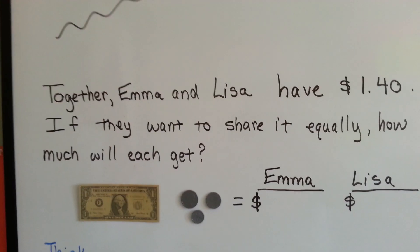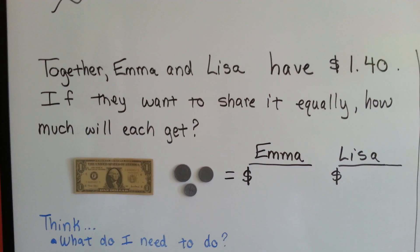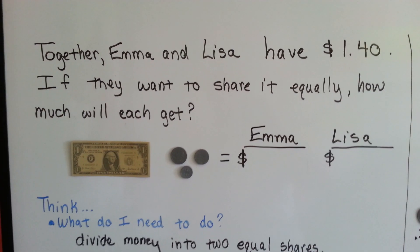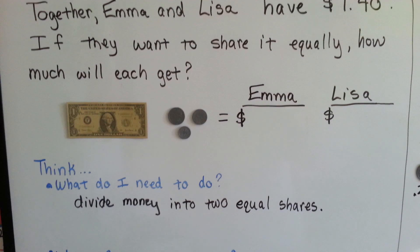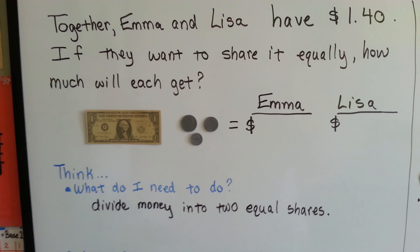Alright, so let's come over here. Together, Emma and Lisa have a dollar forty. If they want to share it equally, how much will each get? Well, we think. What do I need to do? We need to divide the money into two equal shares.